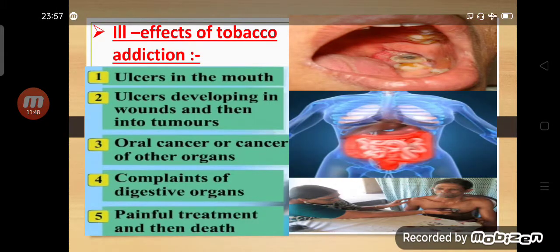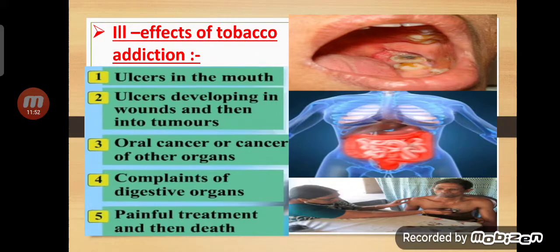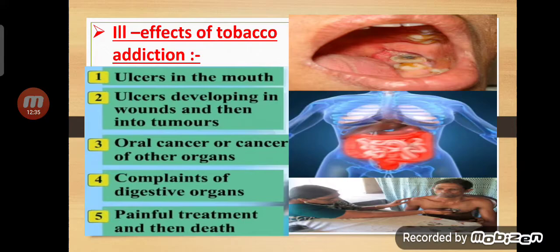Let's see the ill effects — the bad effects — of tobacco addiction. The first one: you can get ulcers in the mouth. An ulcer in the mouth is very painful. When you are eating something spicy, it will start burning, or even when you are talking it will cause pain inside the mouth. The second problem is that the ulcer develops into bigger wounds. First it is only a small boil, then it develops into a bigger wound, and the person may also develop tumors. If the tumor is malignant, it can be cancerous. A lot of time and money has to be spent on treatment.